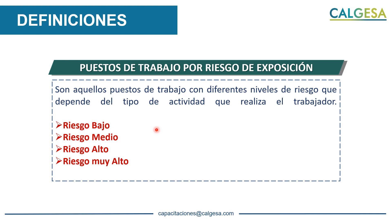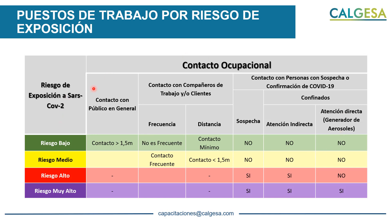Este nivel de riesgo se establece en base al puesto de trabajo, no importa si tienes alguna comorbilidad o si eres del grupo de riesgo. Solamente se toma como referencia el puesto de trabajo. El riesgo alto y muy alto va dirigido especialmente a personal de salud, o en la mayoría de casos a personas que trabajan o tienen relación laboral en centros de salud que atienden a pacientes con COVID.